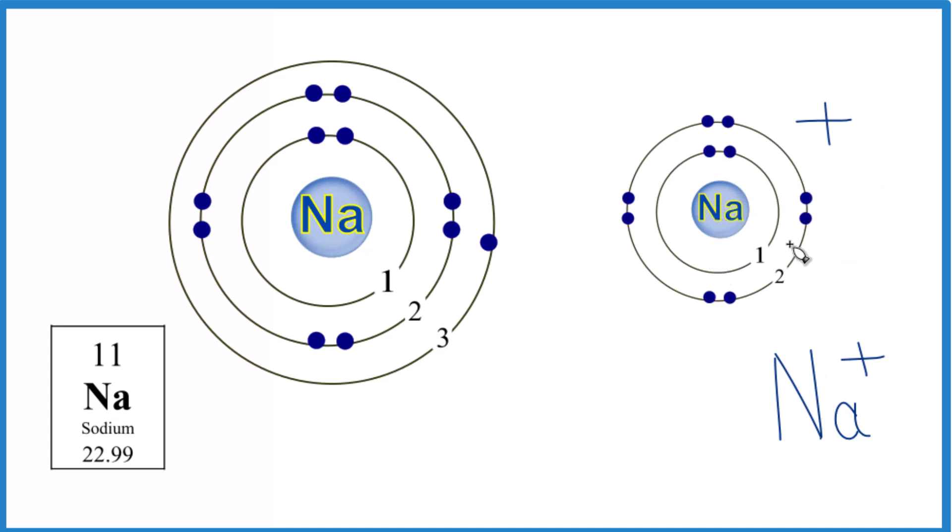So the sodium ion, and positive ions in general, they're going to be smaller than the neutral atom they come from. But that's it. That's the big difference between the sodium and the sodium ion.